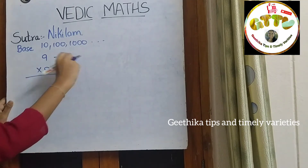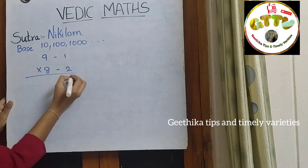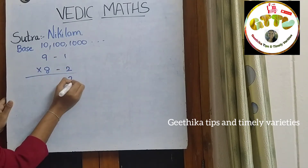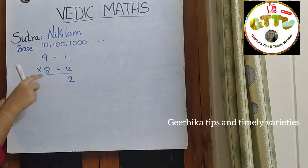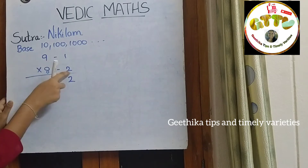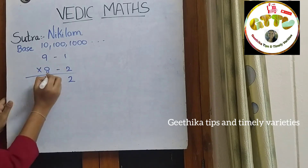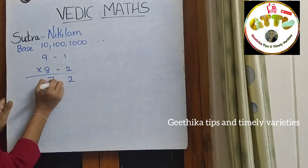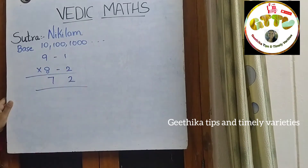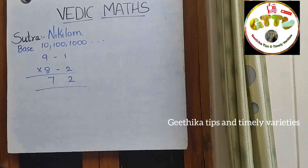Now multiply: 2 into 1 is 2. And 9 minus 2 is 7, giving 70. So 9 into 8 is 72.